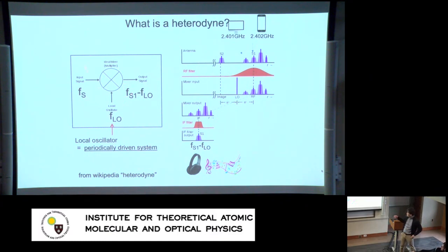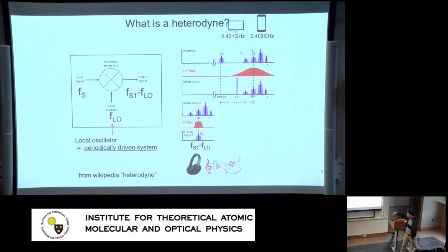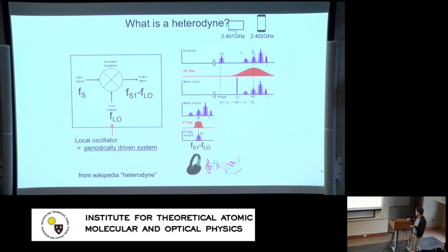A heterodyne device is based on a mixer or multiplier, which is oscillated by an oscillating field and converts the input signal into a different output frequency — making the output frequency a combination of the input and the driving frequency. Using that, we can convert from 2.401 gigahertz down to maybe 0.001 gigahertz, or the kilohertz regime.